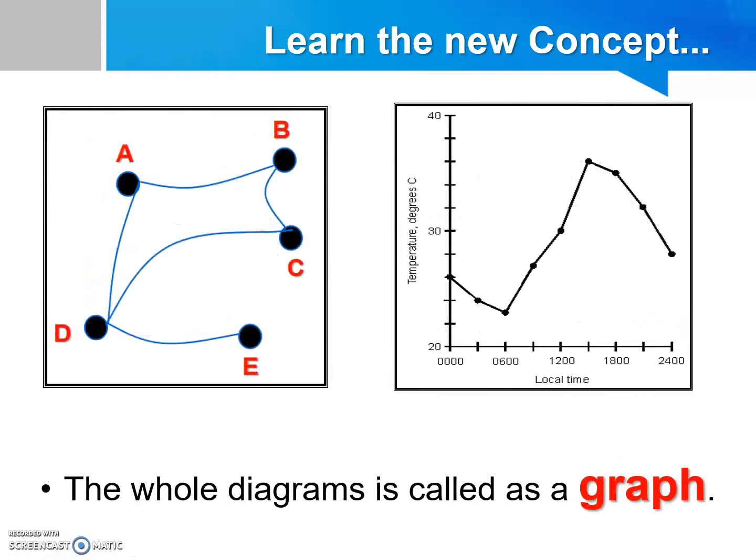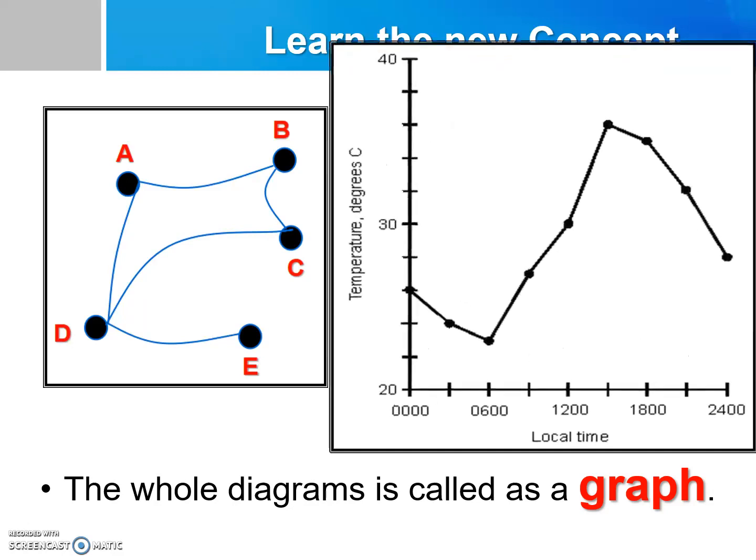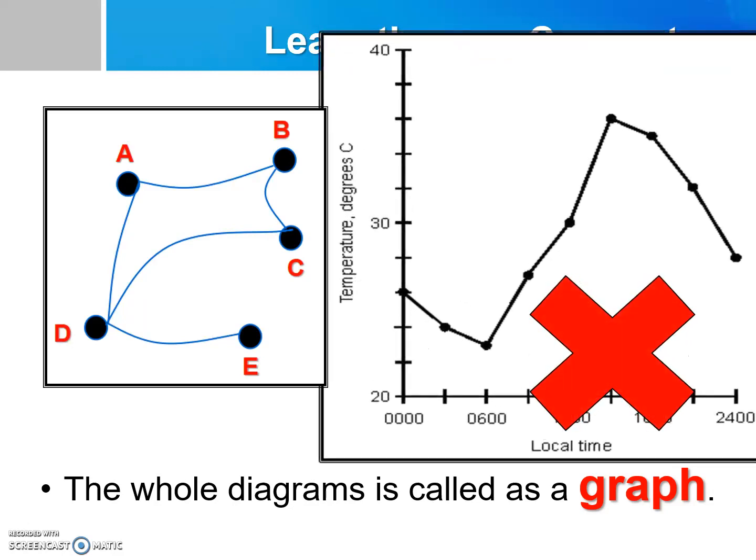So we can call the whole diagram a network or a graph. Yes, that's right, it is a graph. But it is not this kind of graph. They are both called graph, but they are actually different. The graph that we are going to focus on is this.